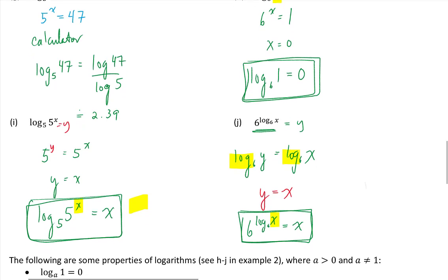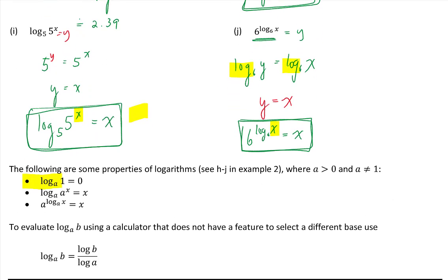So h, i, and j are three properties. Log base a of 1 is always 0. Log base a of a to the exponent of x is always x. And the power a raised to the exponent of log base a of x is equal to x. Three properties you should note.